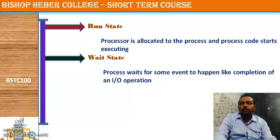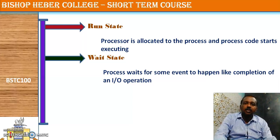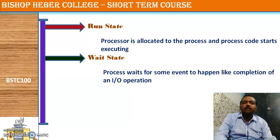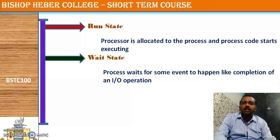There are many policies for deciding which process is selected from the ready list — first in, first out may be one case; shortest process next may be another; balancing the use of I/O devices and the processor is also a criteria to consider. Based on these policies, one process is selected from the ready list and moved to the run state, while the waiting process remains in the wait state.